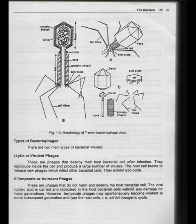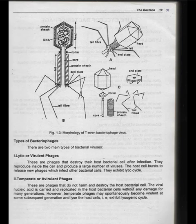Looking at figure 1.3, we can see the core, protein sheet, and end plates. The six tail fibers, tail, head, and end plate are also labeled. This shows the protein sheet and tail fibers — the overall morphology of the T-even bacteriophage virus.